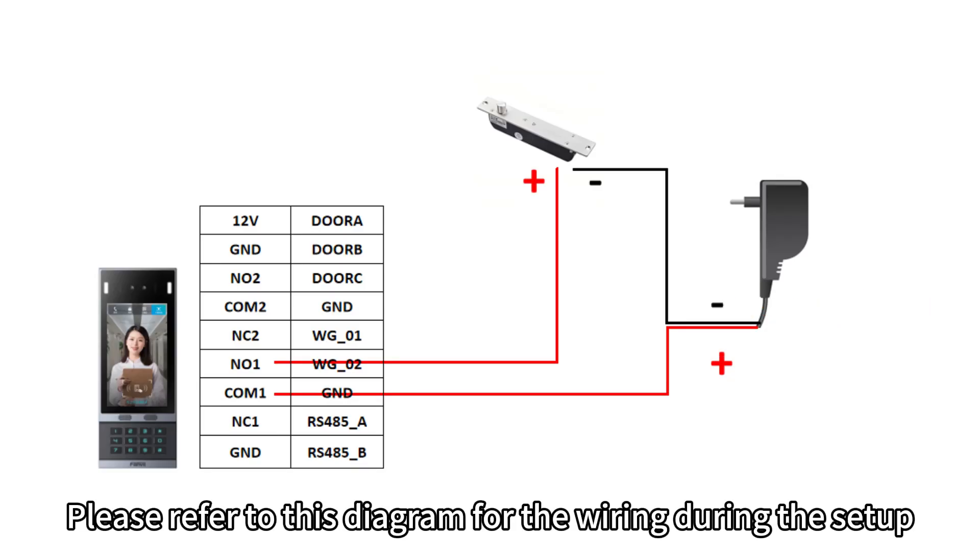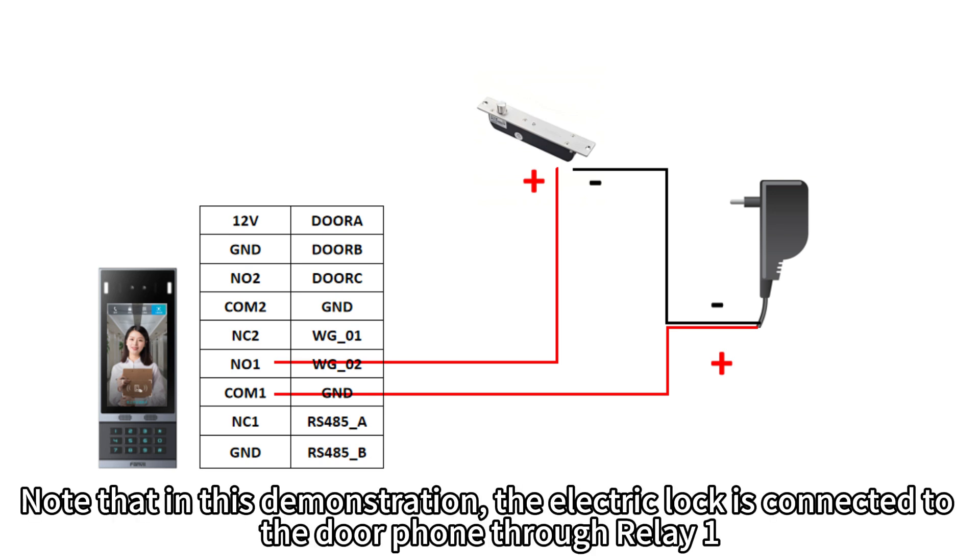Please refer to this diagram for the wiring during the setup. Note that in this demonstration, the electric lock is connected to the door phone through relay 1.